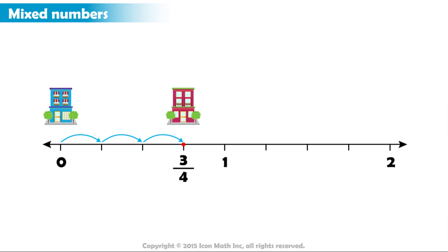What if the distance between the two buildings was up to this point? Then, the distance will be one mile, a whole number.